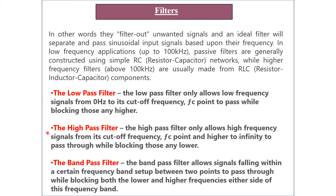We generally classify filters into three types: low-pass filter, high-pass filter, and band-pass filter. A low-pass filter passes low-frequency signals below the cutoff frequency FC and blocks higher frequencies. A high-pass filter passes frequencies above the cutoff frequency.